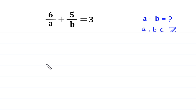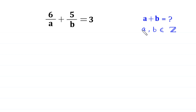Hello everyone, you are welcome to how to solve this very nice Diophantine equation: 6 over a plus 5 over b is equal to 3. We need to find all possible values of a plus b, where a and b are integers.